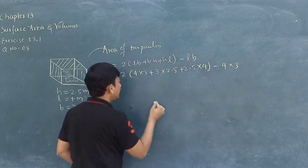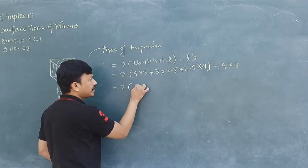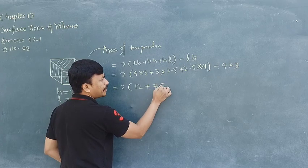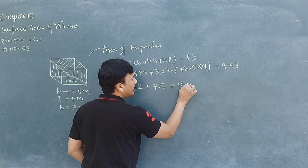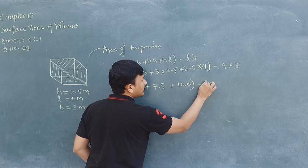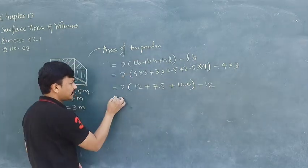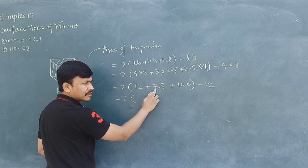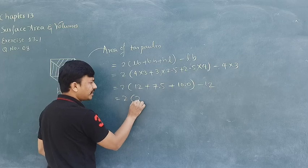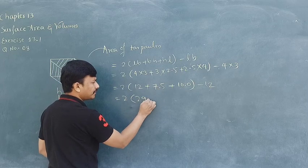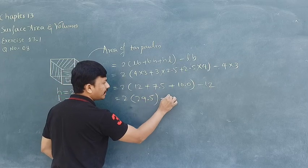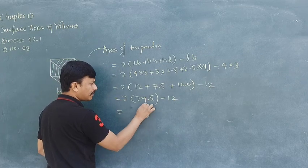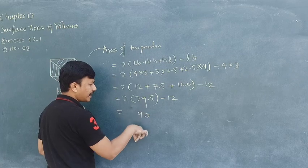4 into 3. This is equal to 2 in bracket, 4 times 3 is 12, 3 times 2.5 is 7.5, 2.5 times 4 is 10, minus 4 times 3 is 12. This is equal to 2 in bracket, 12 plus 7.5 plus 10 is 29.5 minus 12.